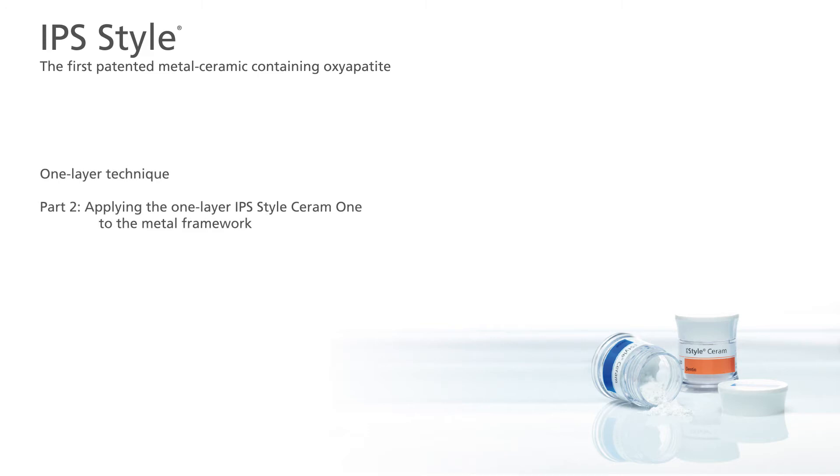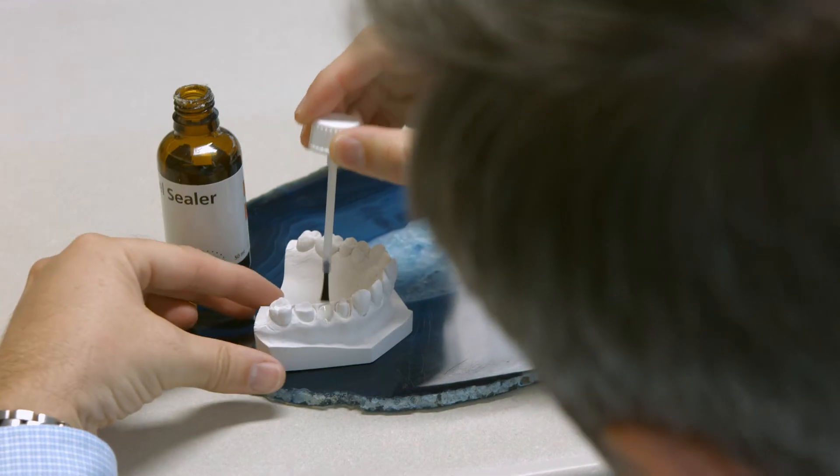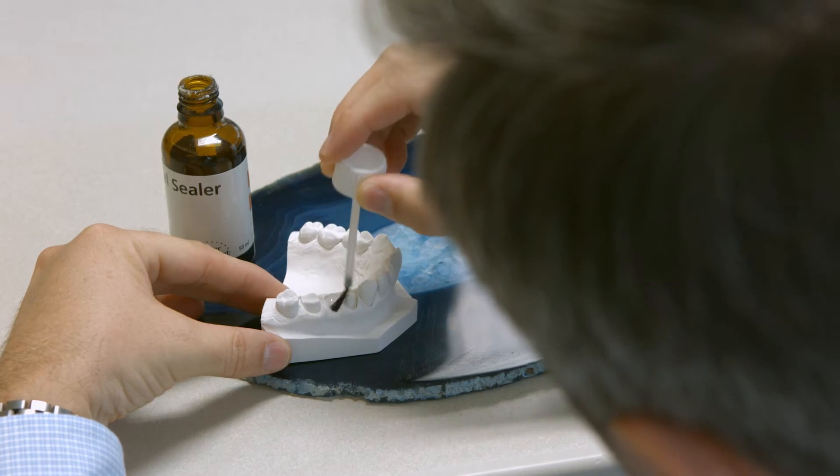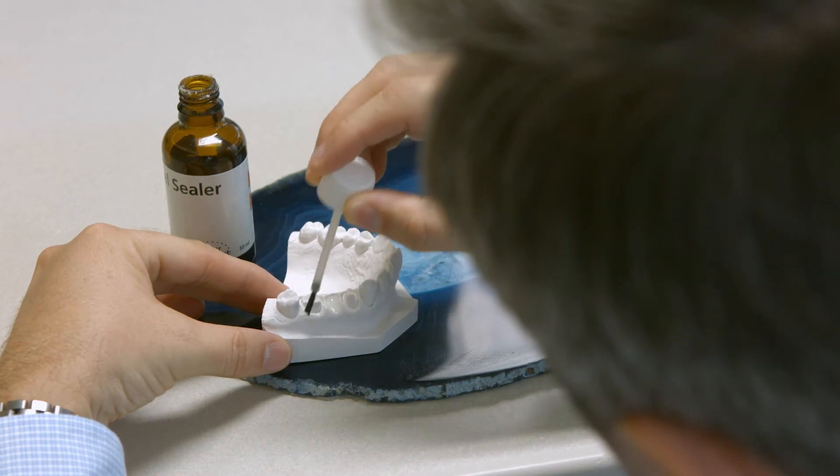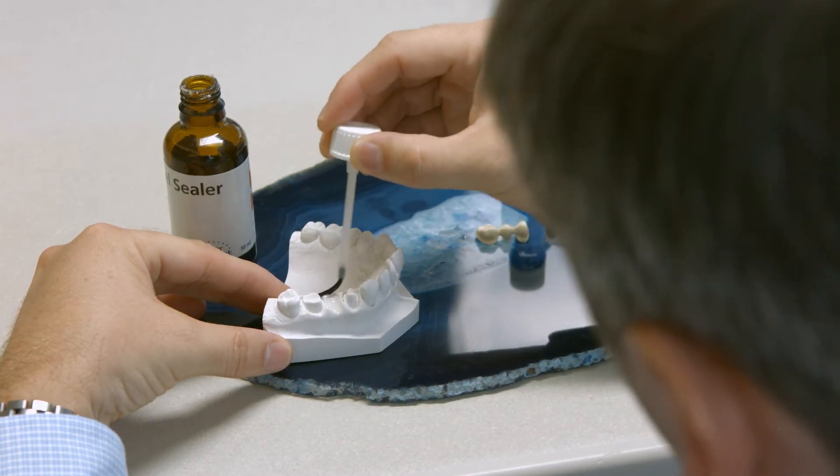Part 2 describes how the metal framework is veneered with the one-layer IPS Style Ceram-1 material. Seal and isolate the stone dies and the adjacent model areas with IPS model sealer before you start to layer IPS Style Ceram-1.